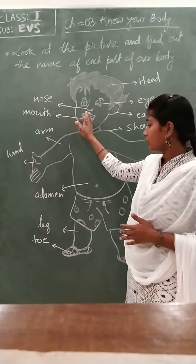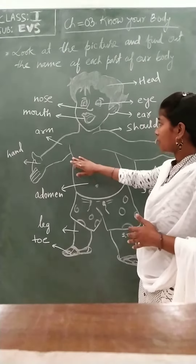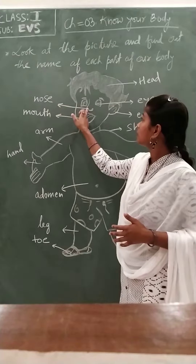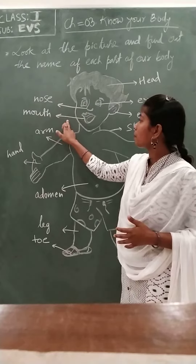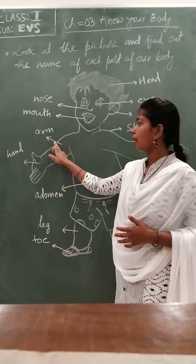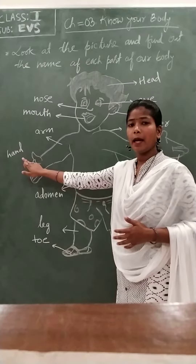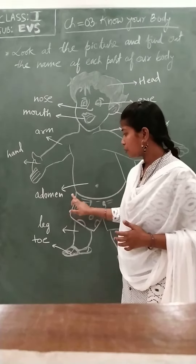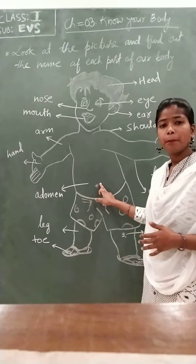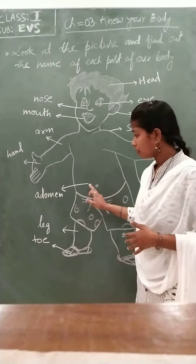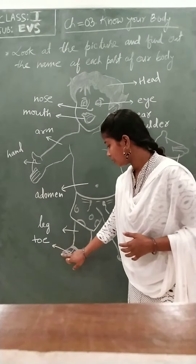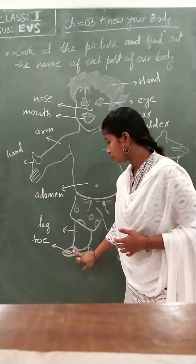Here are parts of the body. This is nose, mouth, arm, hand, abdomen, leg, and toe.